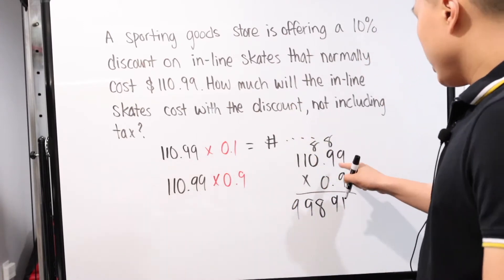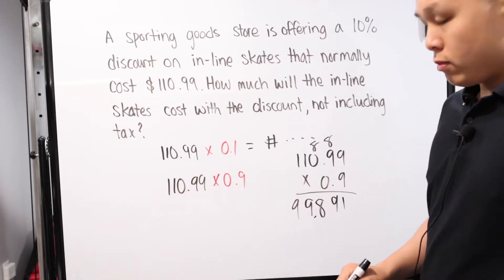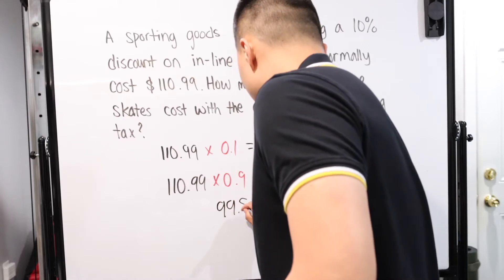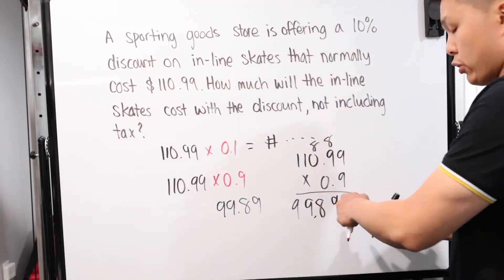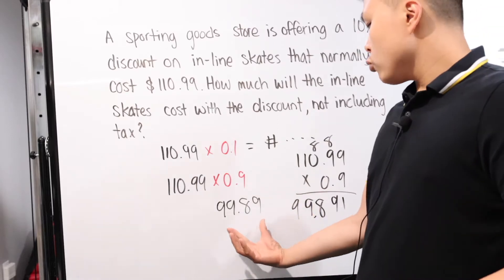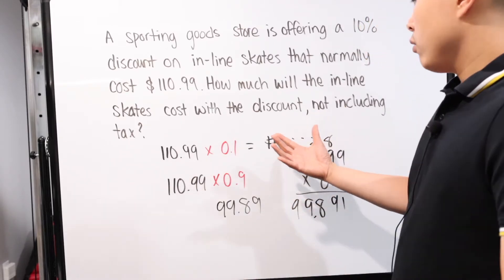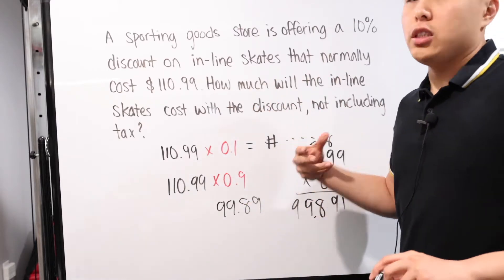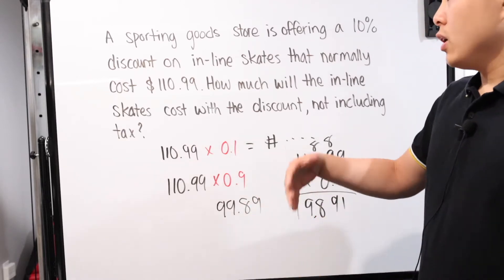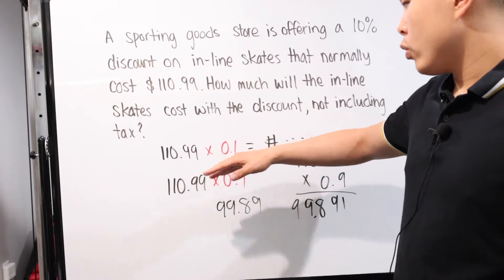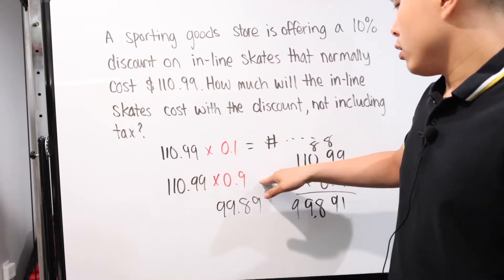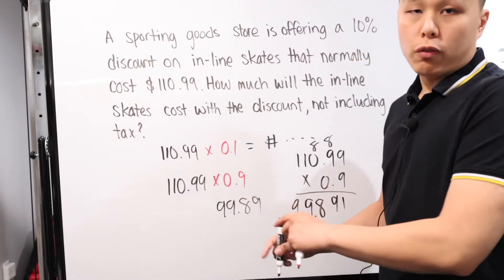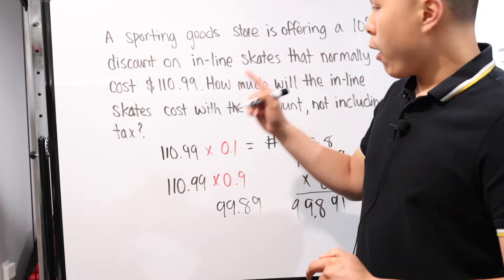And the reason for that is because this is basically saying that out of the original price, which is 110.99, you only want 90% of it, because you're taking off 10%. So all we have to do is just 110.99 times 0.9. Make sure you count the decimals in the end of the multiplication to get it in the correct decimal place. So it's about 99.89, and you can ignore the 0.001. This would be the total price with the discount, not including tax.